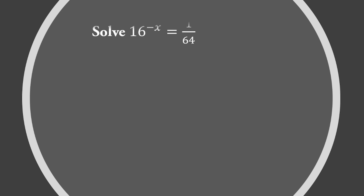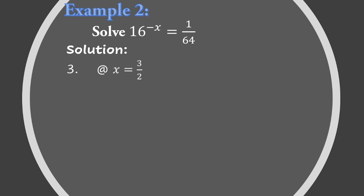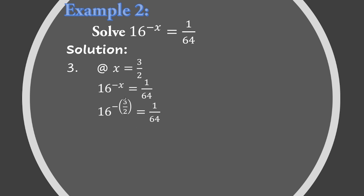For the third step, we check if x = 3/2 is the correct solution by substituting it into the exponential equation. We get 16 raised to negative 3/2 equals 1 over 64. Using the negative exponent law, 16 raised to negative 3/2 equals 1 over 16 raised to 3/2.